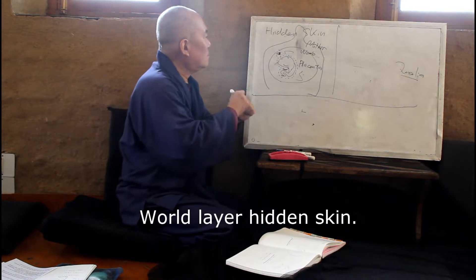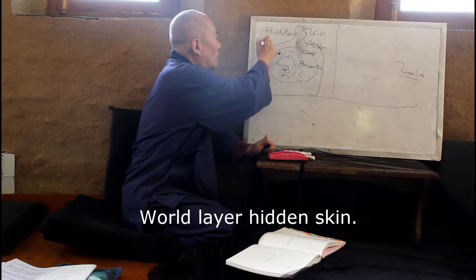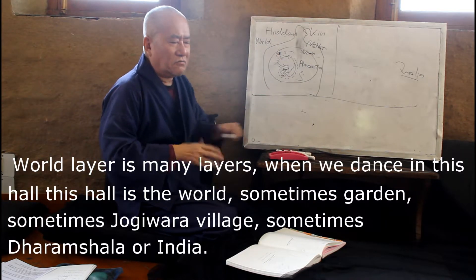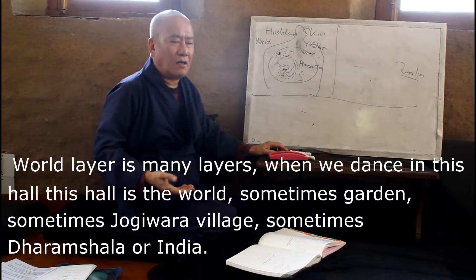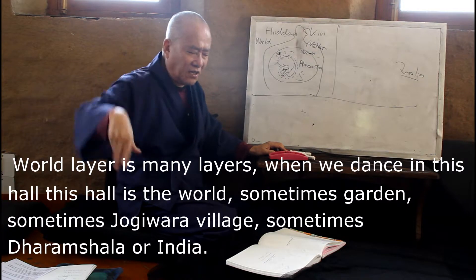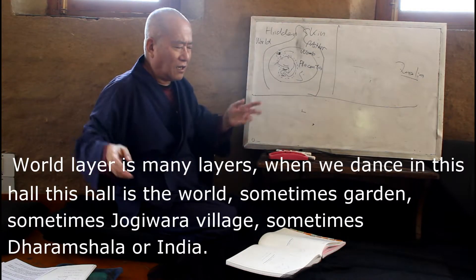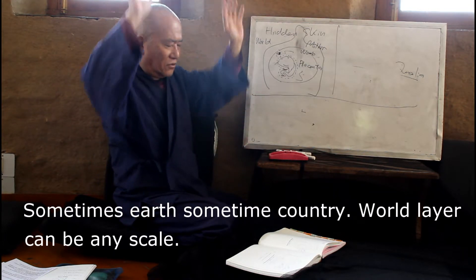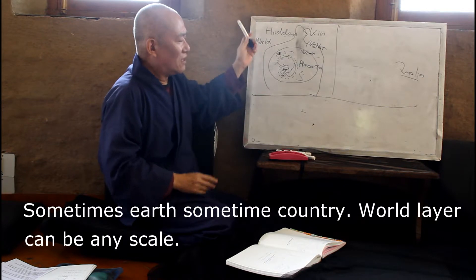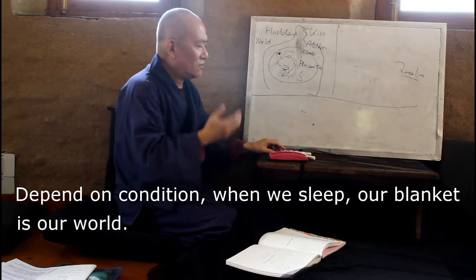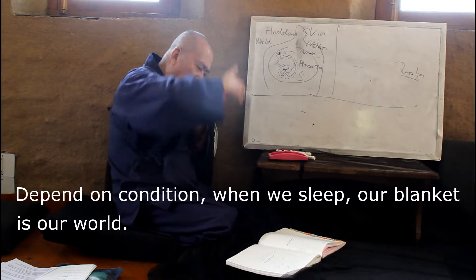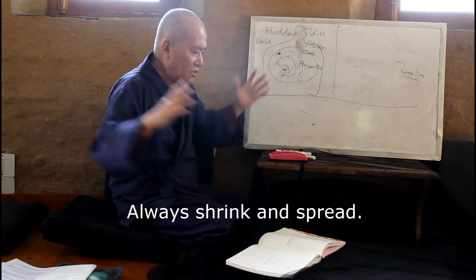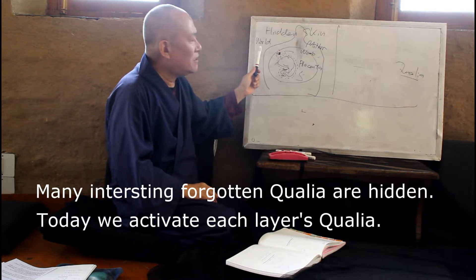The outside is world layers, and the world layers are many, many layers. Now, when we dance in this hole — this hole is world. Sometimes a car, sometimes a place, sometimes a region, sometimes India, sometimes earth, sometimes a country, sometimes the universe. World layers can be anything, depending on our condition. When we sleep, our blanket is our world. Always we shrink and spread, and we feel many interesting things.